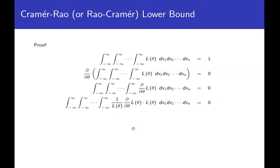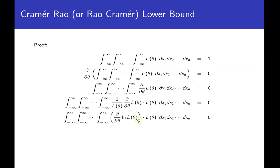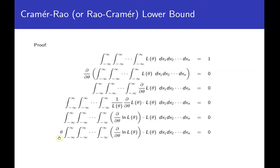We play an algebra game: multiply and divide by the likelihood function inside the integral. The integrand becomes (1/L)(∂L/∂θ) · L, which we recognize as the partial derivative of the log-likelihood function times L. This expression equals zero. We then multiply by theta — the reason will become clear — and since the support is free of theta, we pull theta inside. Label this expression (*).